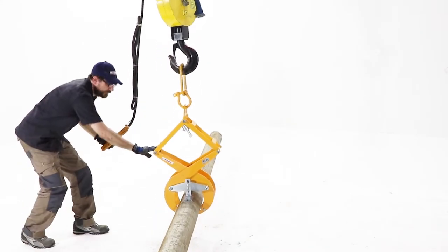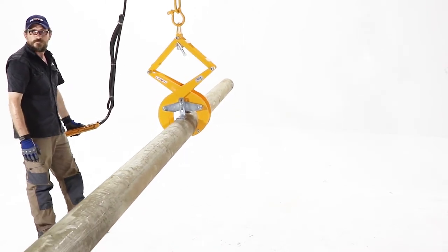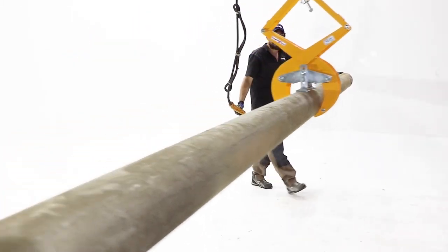Adjustable centerstay sets the position of the clamp to the corresponding pipe diameter. Moreover, the centerstay system provides a solution to unsafe horizontal tilting of the pipe.